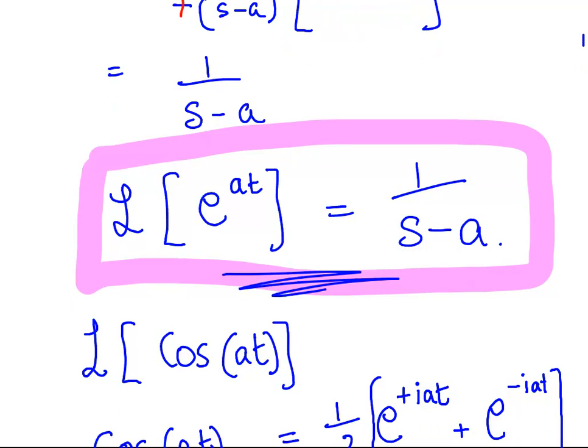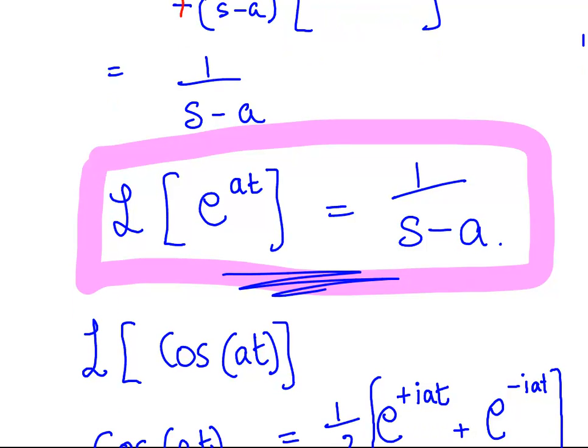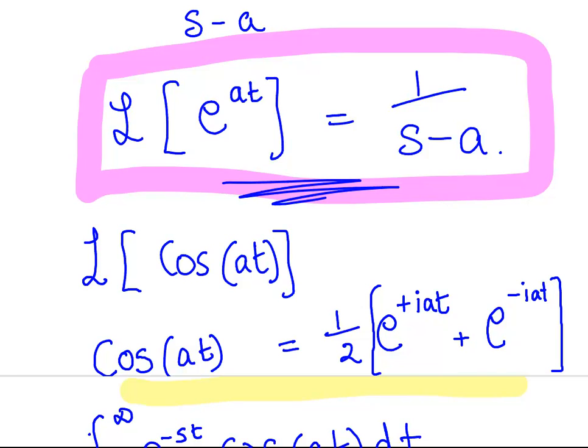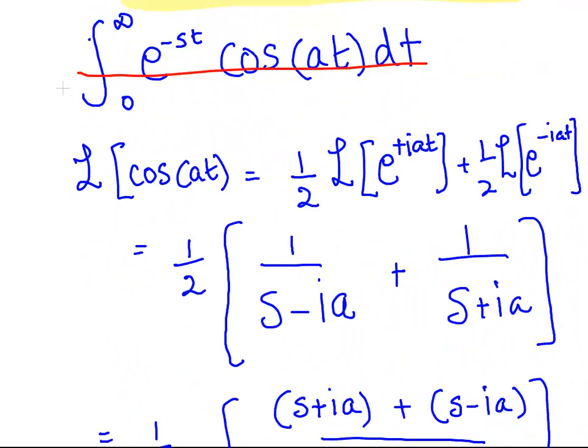Now, and also in the last presentation I discussed how to find the Laplace transform of cos of at. Now, the thing there was that you can actually re-express cos of at as the sum of two exponential terms. Okay, and then I did that also.